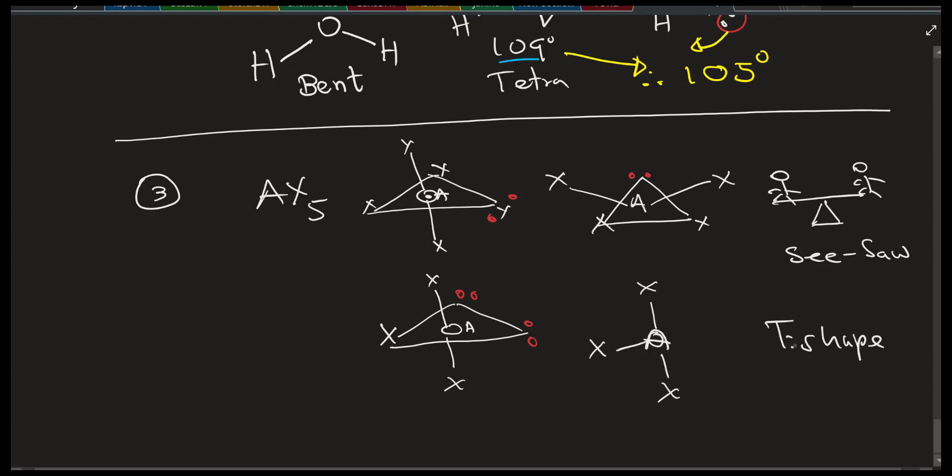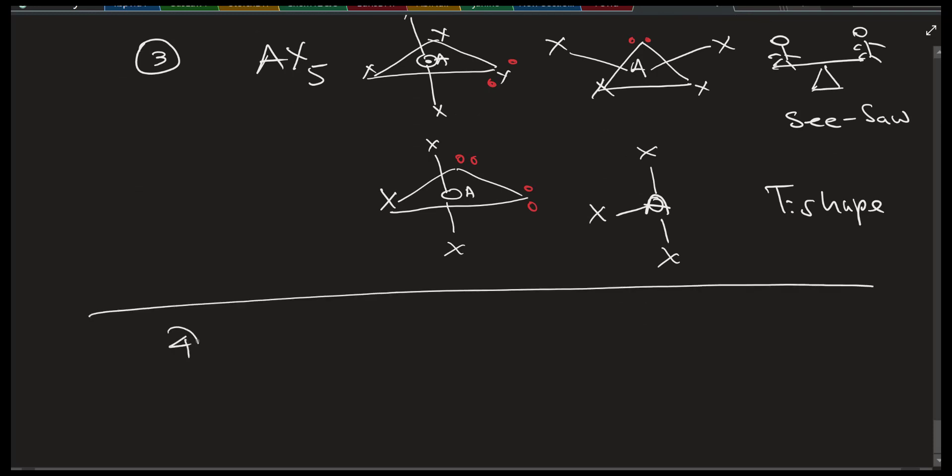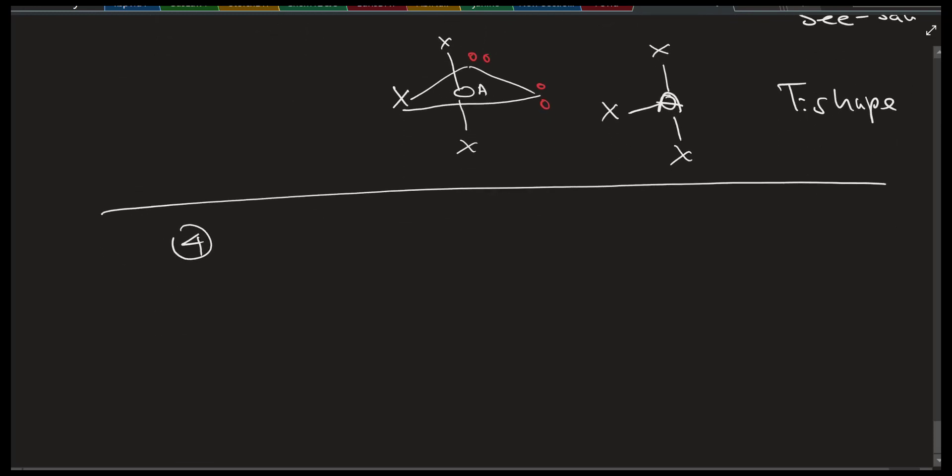If you put two lone pairs on the middle triangle, you're going to get the T-shape. Look at that one. That's actually T-shape. So that's another variation.